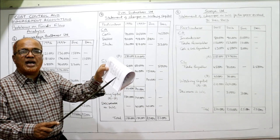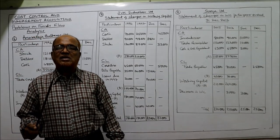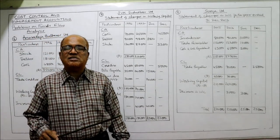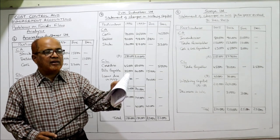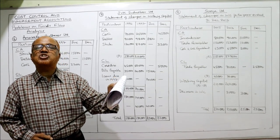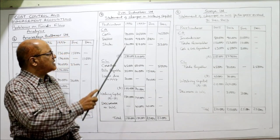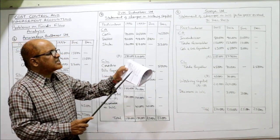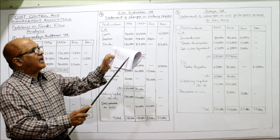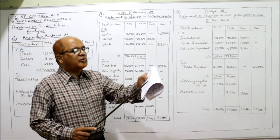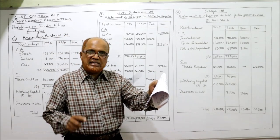On the liability side, creditors and bills payable are current liabilities. The loan has a note saying it is due in 1998 (there is a printing mistake in the problem — it should be 1998, not 1997). Any liability due within one year is a current liability, so this loan is also a current liability. Capital and P&L account are not current liabilities. So three current liabilities: creditors, bills payable, and loan due in 1998.